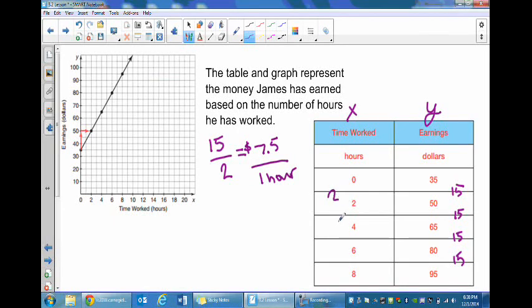So again we've got 15 over 2. The table tells us the same thing as the graph, that James earned $7.50 in one hour.